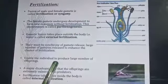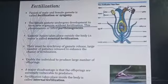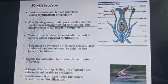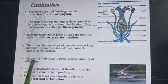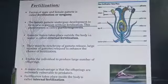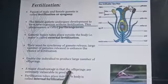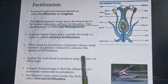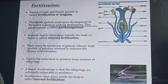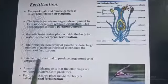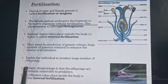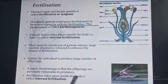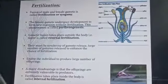There is a great chance of the gametes being damaged, which is why large male gamete formation is important to enable individuals to produce a large number of offspring. A major disadvantage is that the offspring are extremely vulnerable to predators — for example, gametes released in water may be eaten by fishes, crustaceans, and other animals. When fertilization takes place inside the body, it is called internal fertilization.